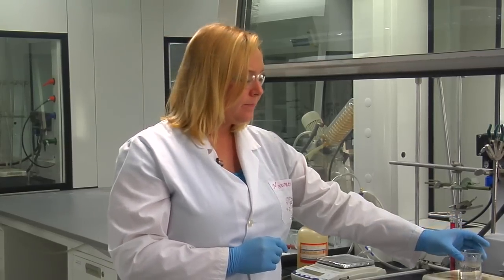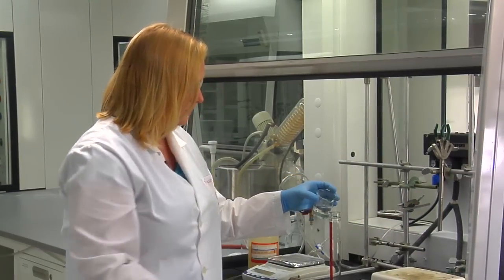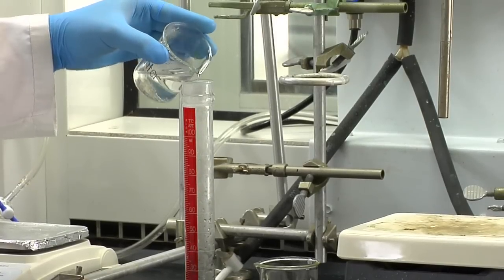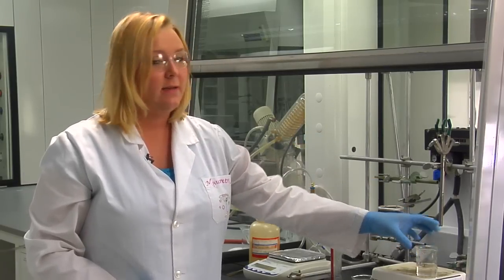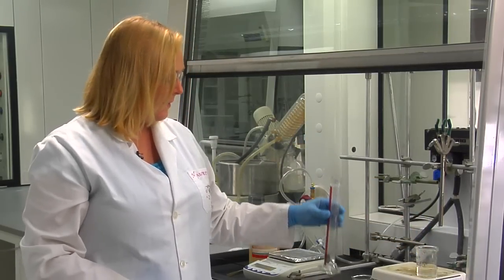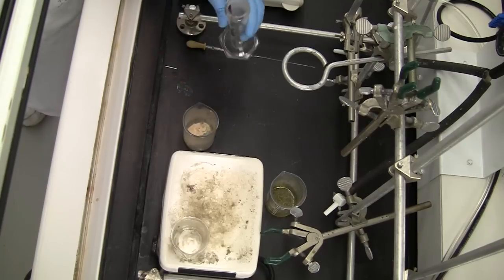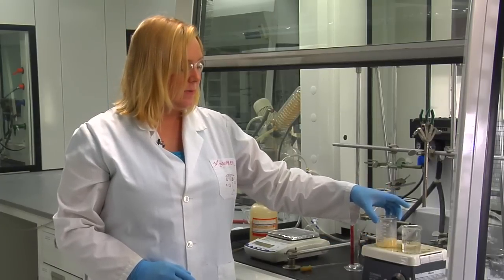When we're doing recrystallization, it's important to use a minimum amount of solvent. So we're going to start with only about 20 mils of hot water. When you're not using the water, you want to make sure that you keep it on the hot plate, so that it stays hot. So we'll add this to our salicylic acid. And to help it dissolve, we're going to place it on the hot plate and swirl it.